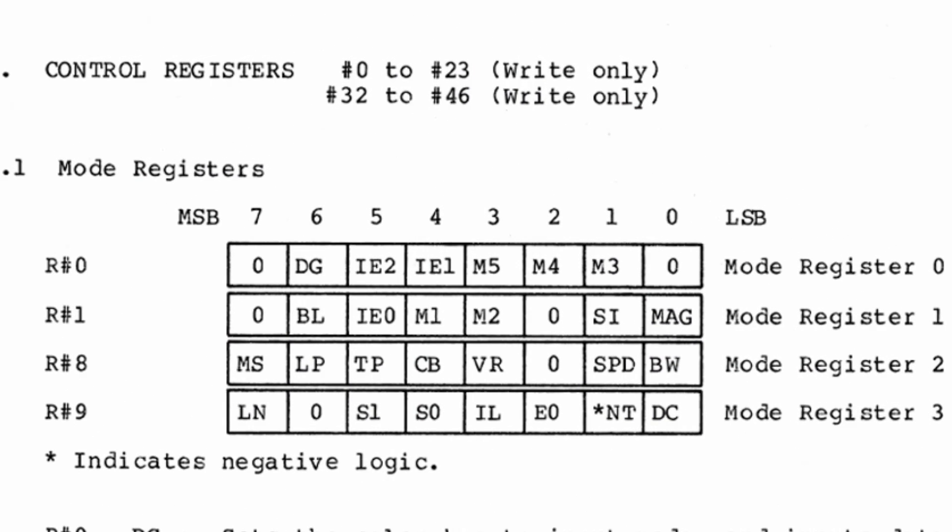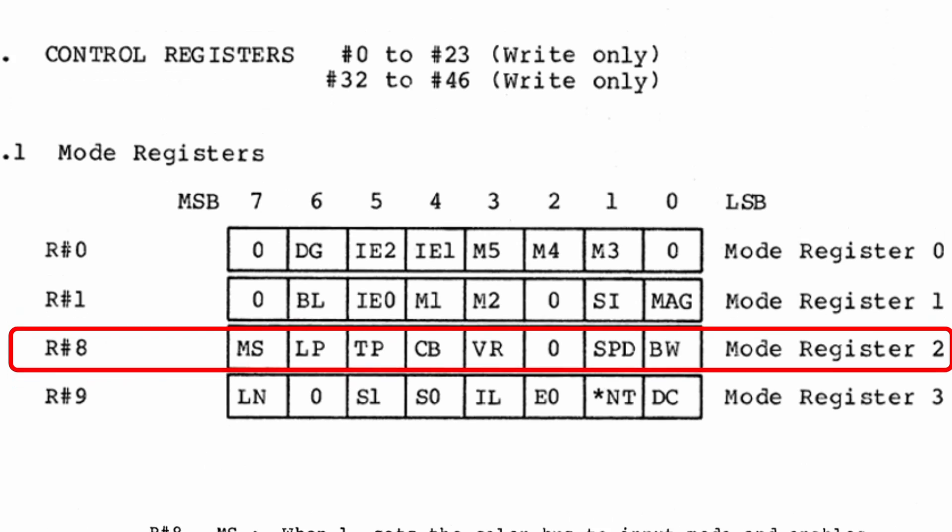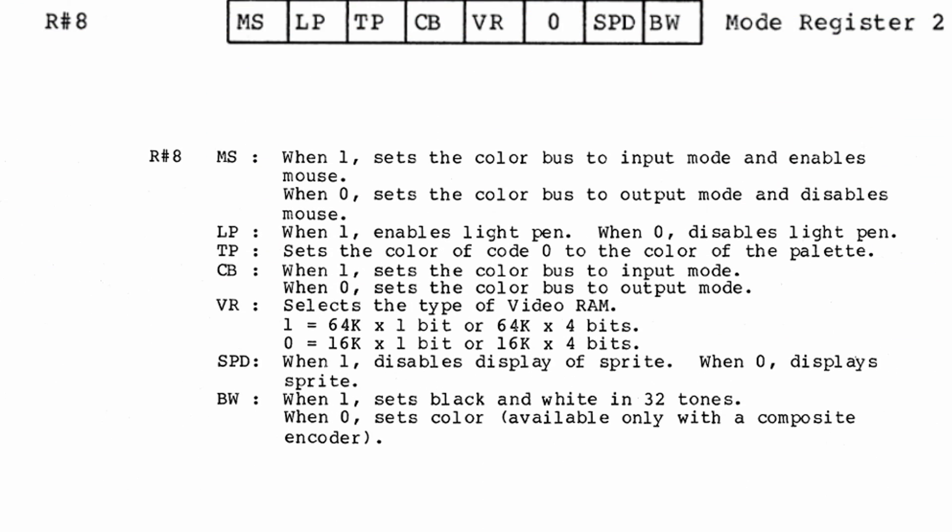Our journey begins here, in register number 8 of the VDP register bank — the mode register 2. This is not a very exciting register; it is the kind that you set up once at the beginning of your program and never touch again. But let's do a breakdown of it anyway.